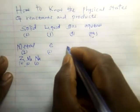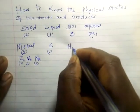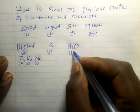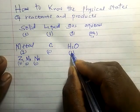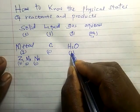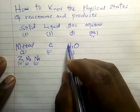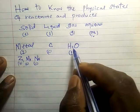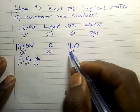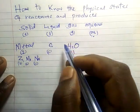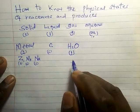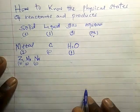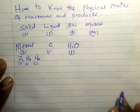Liquid is majorly used when we are talking about water — we indicate the state of water as liquid (L). And when the acid is highly concentrated, like concentrated sulfuric acid, we also use L for liquid. Now what about aqueous?